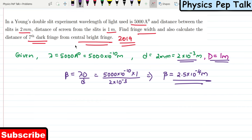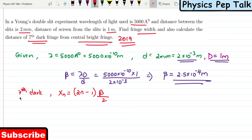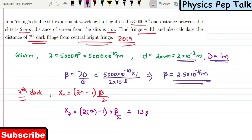Next, what is the distance between the 7th dark fringe and the central bright fringe? The formula is Xn = (2n − 1) × β/2, where n is the dark fringe number. In this case n = 7, so X7 = (2×7 − 1) × β/2 = 13 × 2.5 × 10⁻⁴ / 2. The value of X7 is found to be 1.625 × 10⁻³ meters. The 7th dark fringe is at a distance of 1.625 × 10⁻³ meters from the central bright fringe.